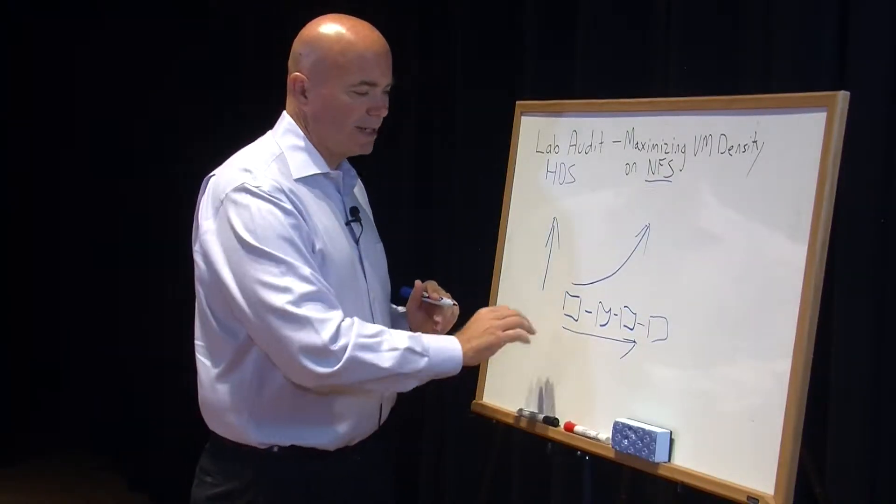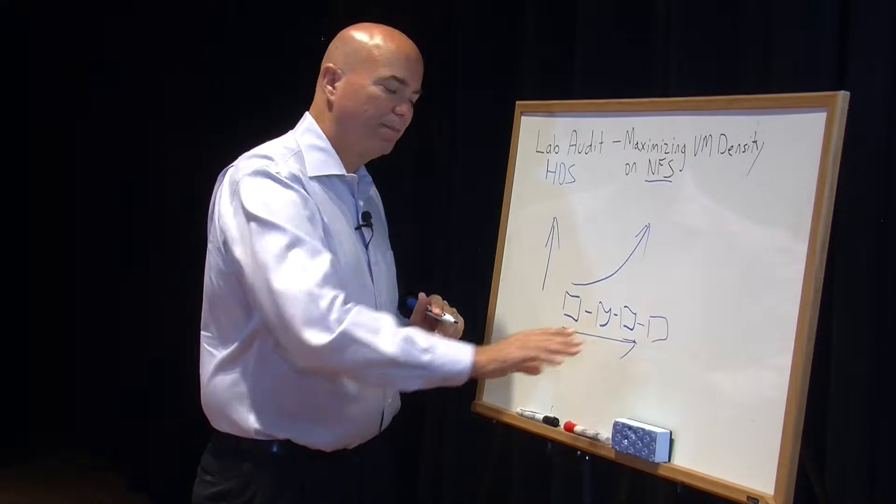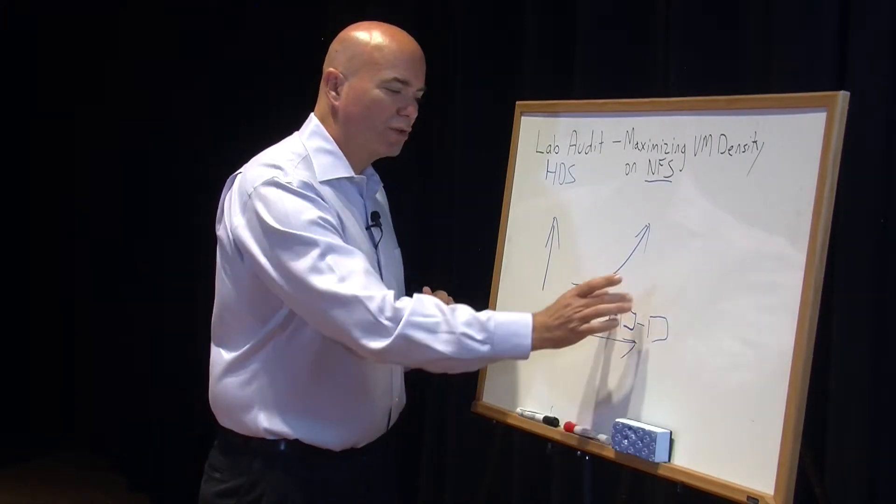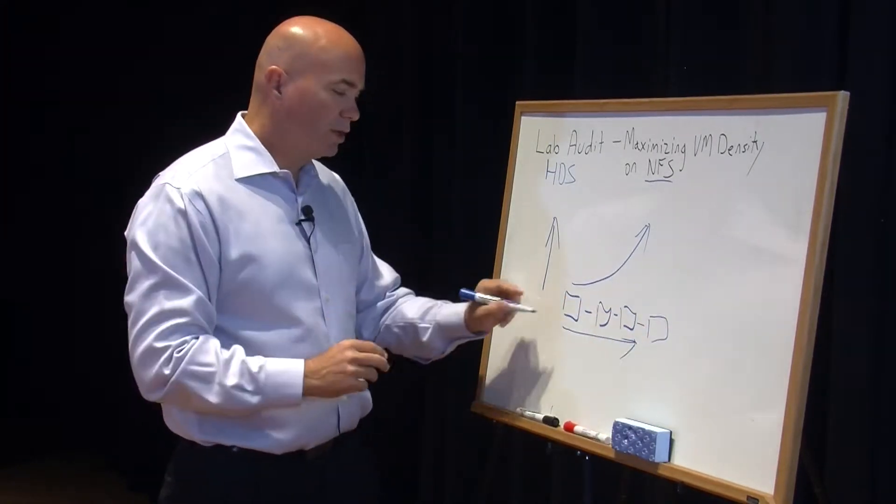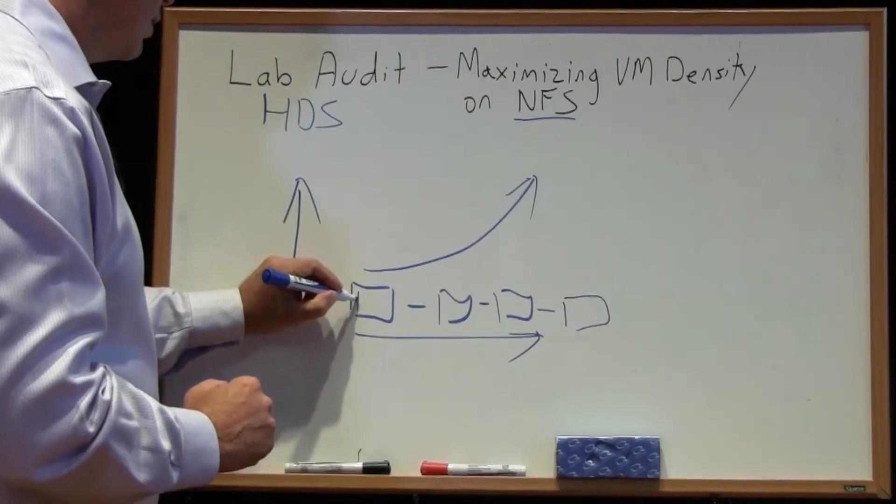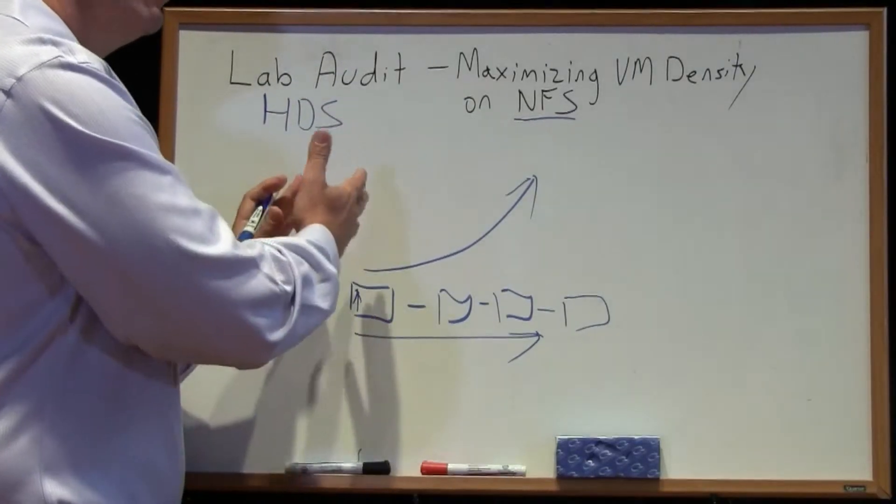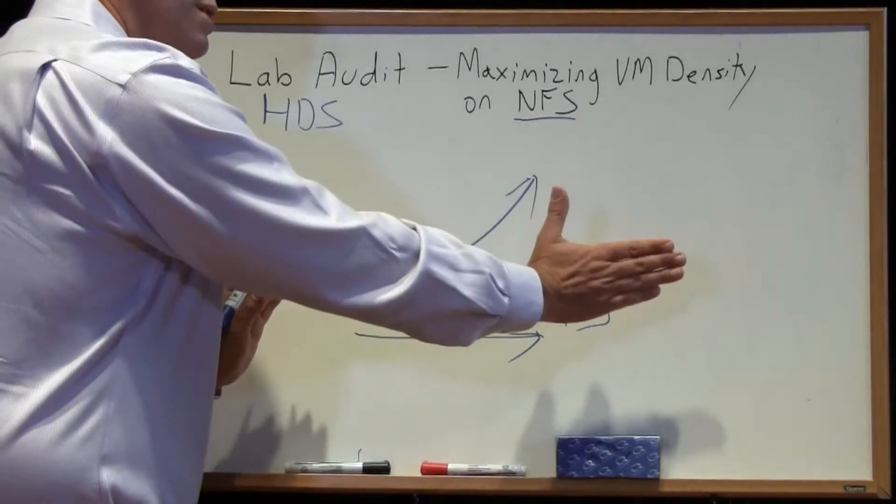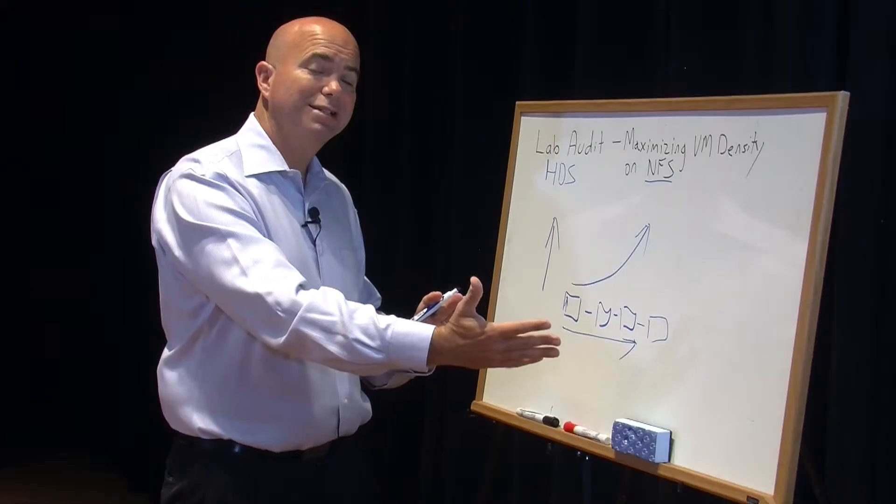What we tend to see though, is as these environments scale out, each individual node is substantially underutilized. So really what we want to do is we want to make sure we can scale the node itself up before we scale out. And that's exactly what Hitachi can do.